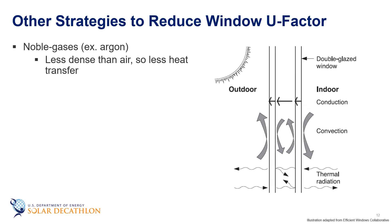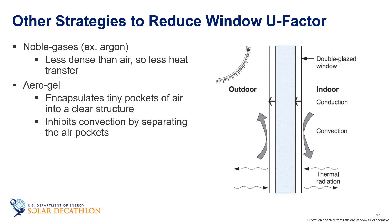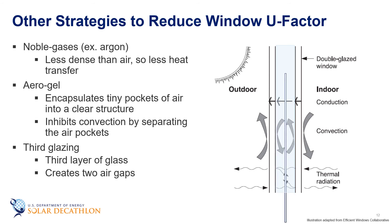In addition to tuning the gap to minimize convection, different gases can fill the gap to further increase thermal resistance. Using noble gases such as argon instead of air minimizes heat transfer because they are less dense and have fewer molecules to move heat from one pane to the other. A product called aerogel encapsulates tiny bits of air into a clear structure, inhibiting convection by placing air into separate pockets. Another strategy is to add a very thin piece of glass between the first two layers, creating three panes and two air gaps to further decrease the overall U-factor.